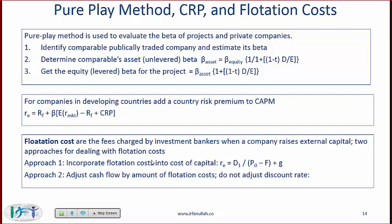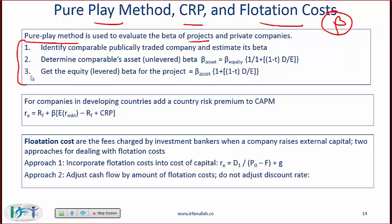Everything covered so far has the highest probability of being tested as it represents the core of cost of capital. For more peripheral but still important material: if you want to estimate the required return for a private company, a division, or a large project, the beta is not easily known. To use CAPM you need the project's beta. The method used is called the pure play method. You identify a comparable publicly traded company, estimate its beta — for example, if you have a milk division, find a publicly traded milk company and determine their beta.